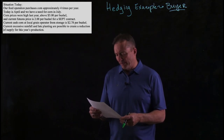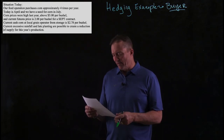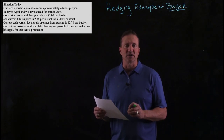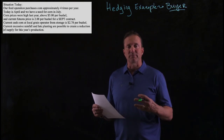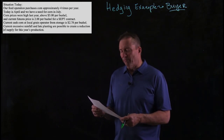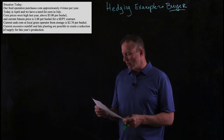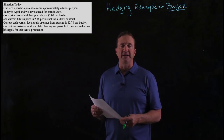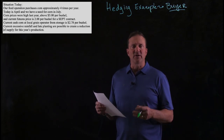Today is April, and we need to buy corn in July. Corn prices were high last year — well above $3 in my example. But the current futures price on a September contract is about $2.88 a bushel, so prices appear to be low. Current cash price at the local grain operator from storage is $2.78 — again, low prices. Current excessive rainfall and late planting are possible, which would create a reduction in supply, and we're worried about price going up. That's our beginning situation.